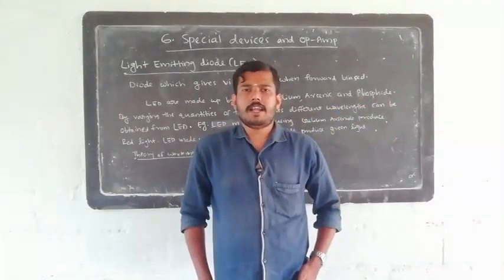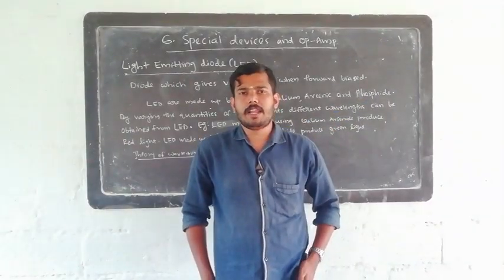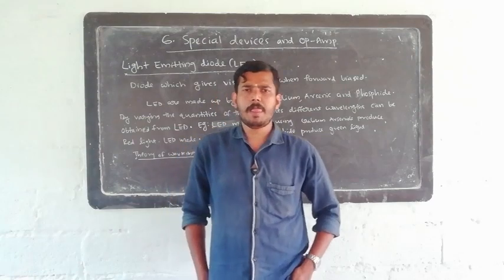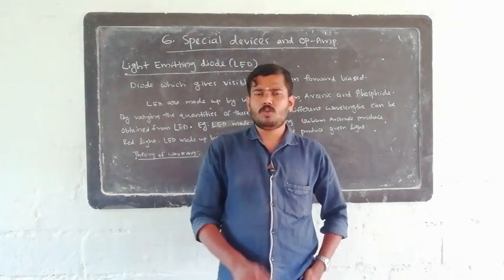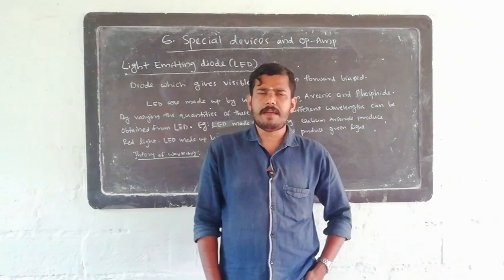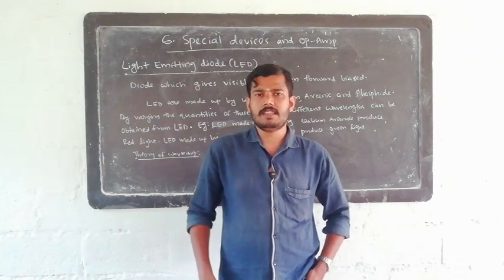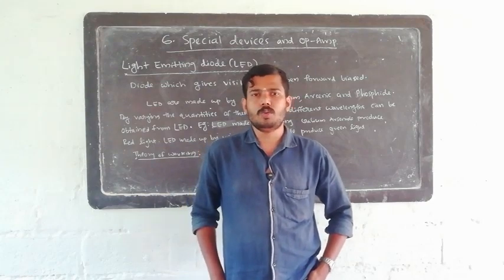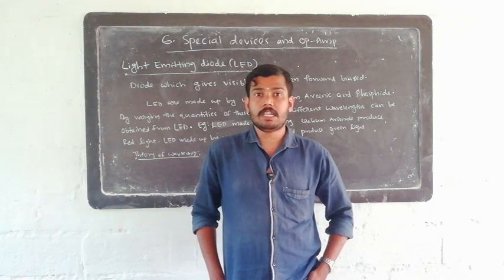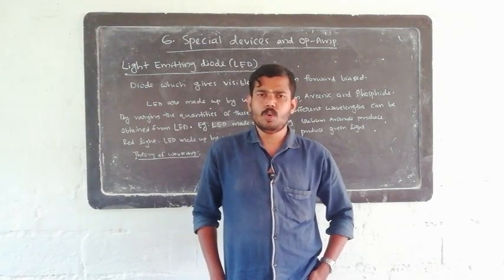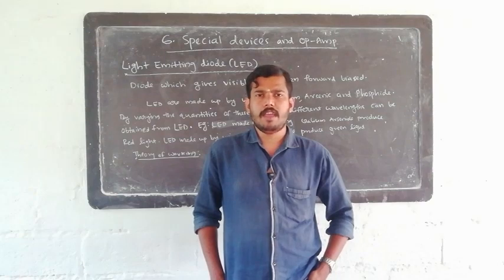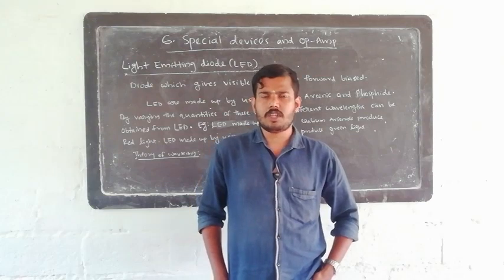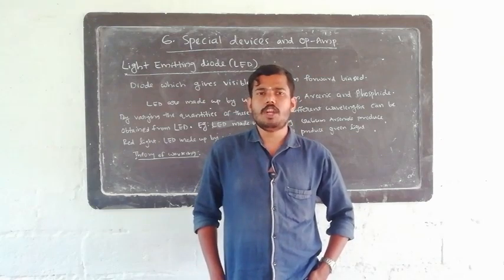Hi students. In our electronics paper, in the 6th chapter, we are going to study special devices and op-amp. In this chapter, we are going to study diode and transistor, electronic components. We are going to study LED, unijunction transistor, junction field effect transistor, MOSFET — Metal Oxide Semiconductor Field Effect Transistor — and operation amplifier.